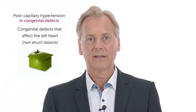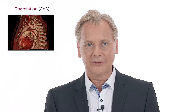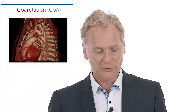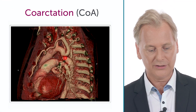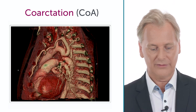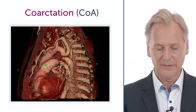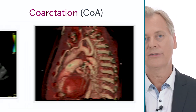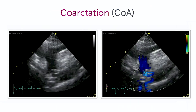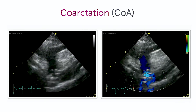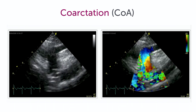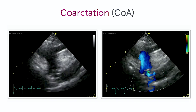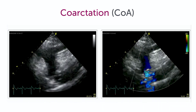What are they? First of all, coarctation. Here is a beautiful study that shows such a coarctation. You can see there is obstruction in the descending part of the aorta. In such a situation we have pressure overload of the left ventricle, which can cause failure of the left ventricle and post-capillary pulmonary hypertension in the later stage usually.